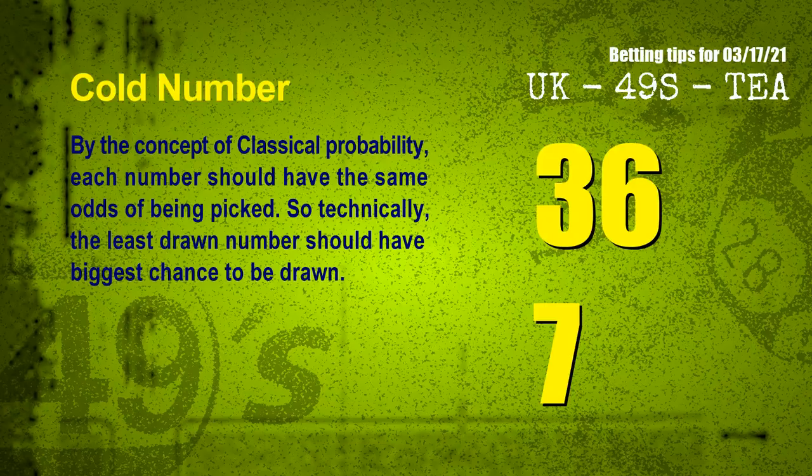In the end of this video, we have two more tips for you: cold numbers and overdue numbers. By the concept of classical probability, each number should have the same odds of being picked. So technically, the least drawn number should have the biggest chance to be drawn. We count thousands of results and find out the coldest two numbers for next draw will be 36 and 07.